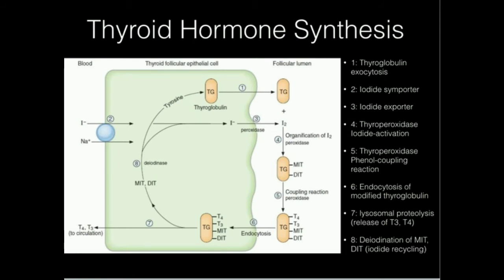The thyroid gland has follicular cells, which are the site of thyroid hormone synthesis, along with the follicle lumen. Initially, a protein called thyroglobulin is synthesized. Thyroglobulin has many tyrosine residues attached to it — a large part of it is tyrosine. It's initially made in the follicular cell but is exocytosed into the lumen of the follicle.